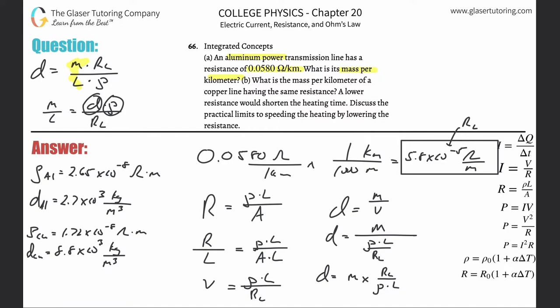The resistivity, we look up for aluminum, the density, we look up for aluminum and the resistance per length we were given. It's all in meters. Just be careful at the end when you do your conversion. So now it's simply going to be the mass per length is the density of aluminum, which was 2.7 times 10 to the 3 multiplied by the resistivity, which was 2.65 times 10 to the minus 8. And now divided by 5.8 times 10 to the minus 5.